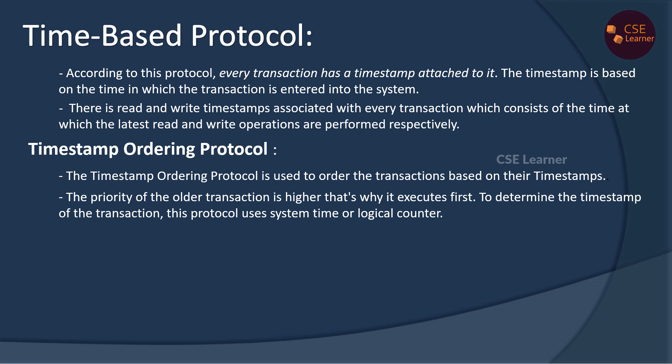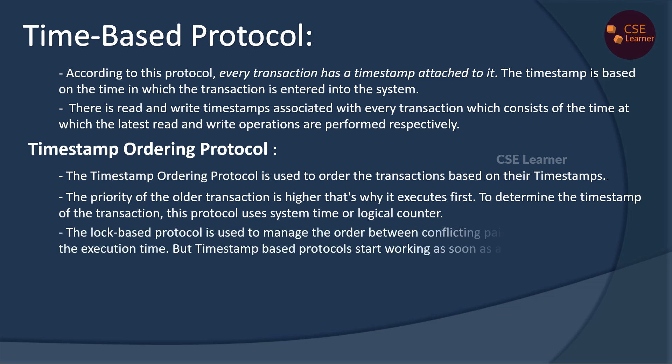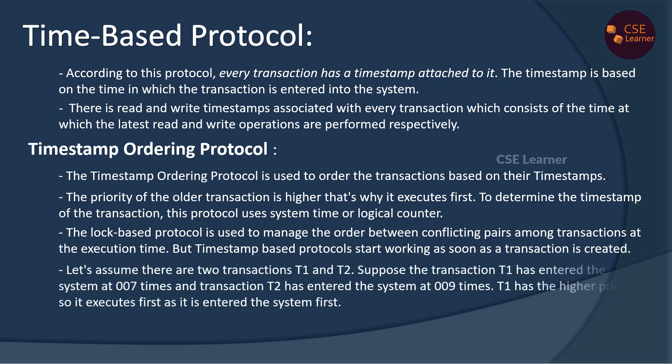In the log-based protocol, when transactions are executed, you can see conflicts in the transaction. But in the timestamp ordering protocol, conflicts are resolved before they start. For example, T1 entered at time 1007 and T2 entered at time 2009. Transaction 1 has higher priority, so transaction 1 is first to execute. This is the timestamp ordering protocol.